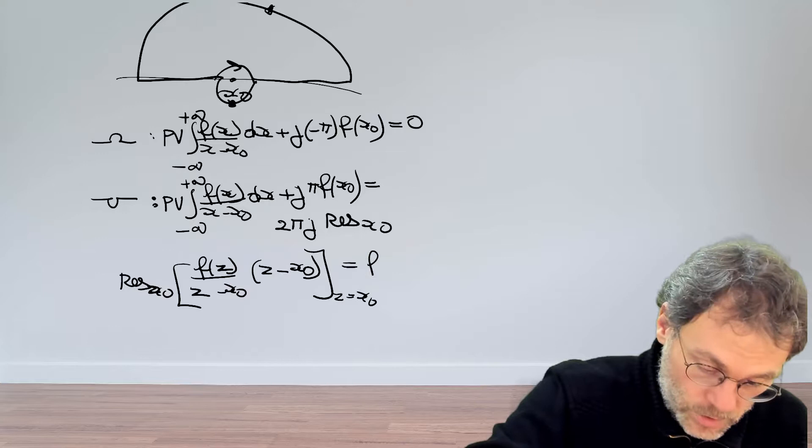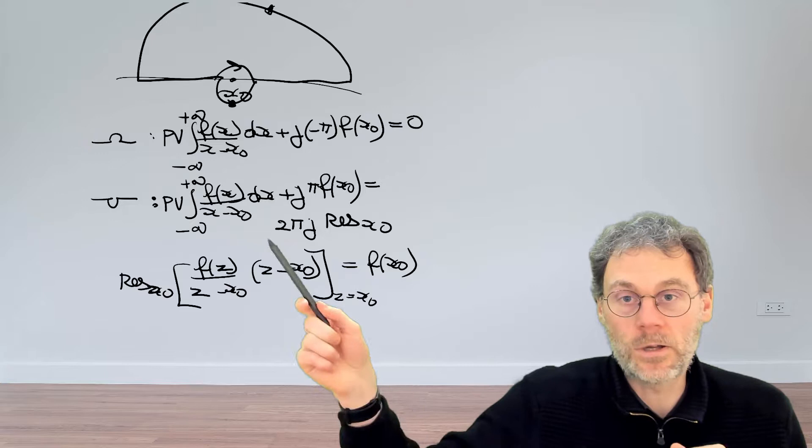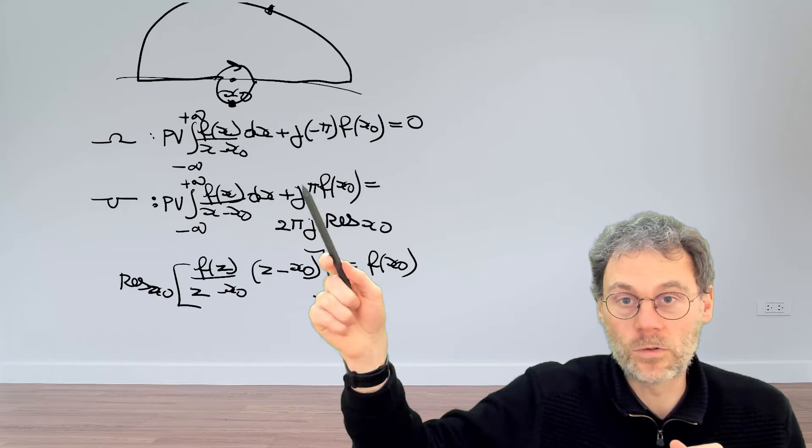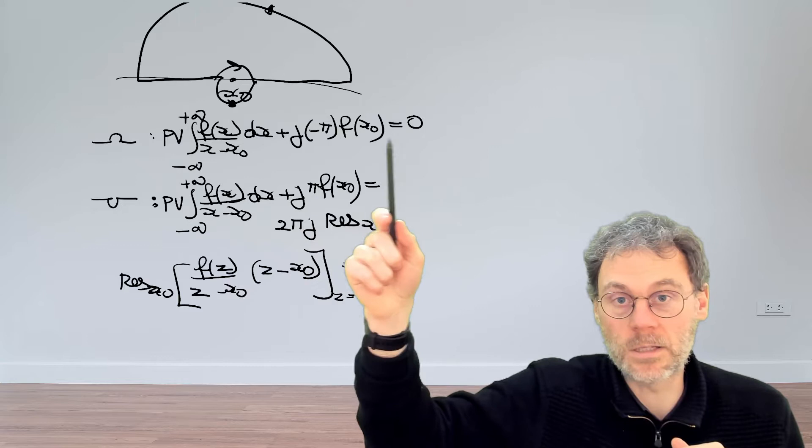This is good news because this becomes 2 pi j f of x0, and once we bring that over to the left hand side this will cause this plus j to become a minus j. So we're in exactly the same situation as we had in the textbook. Everything is nice and consistent.